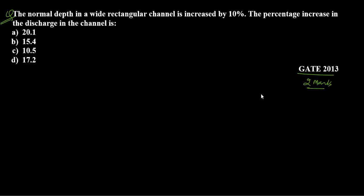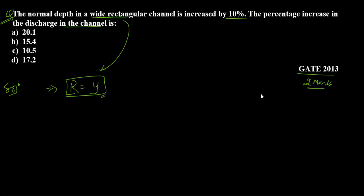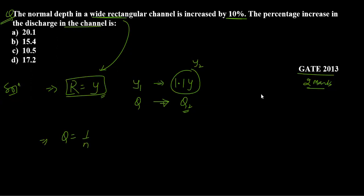The last question from GATE 2.13: In a wide rectangular channel, normal depth is increased by 10%. What is the percentage increase in discharge? For a wide rectangular channel, the hydraulic radius R equals y (depth). With depth increased to 1.1y and using Manning's equation, discharge Q is proportional to A × R^(2/3), giving Q proportional to y^(5/3).